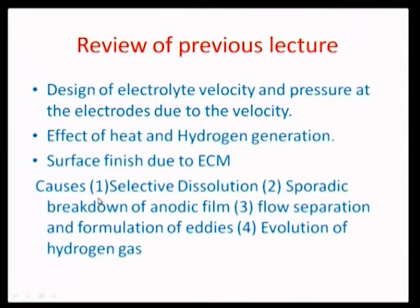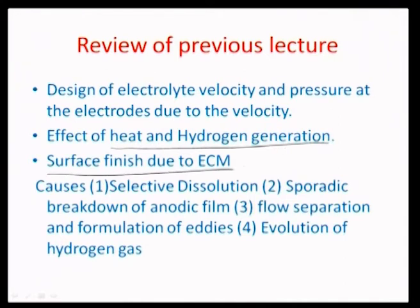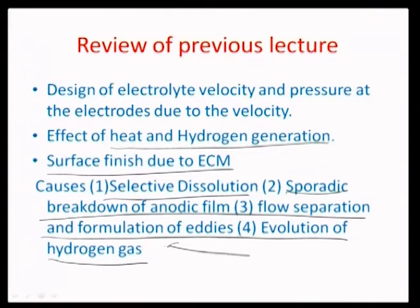What augments the velocity is that the temperature should not go below the boiling point, and what limits the velocity is that the pressure generated because of the viscous effect should not go above the ultimate yield stress of the material. We also investigated the various effects of heat and hydrogen generation on the ECM process and the electrolyte, and looked at causes of surface finish issues including selective dissolution, sporadic breakdown of anodic film, flow separation, formulation of eddies, and evolution of hydrogen gas.